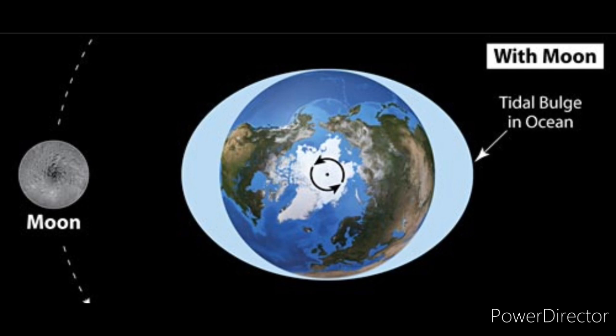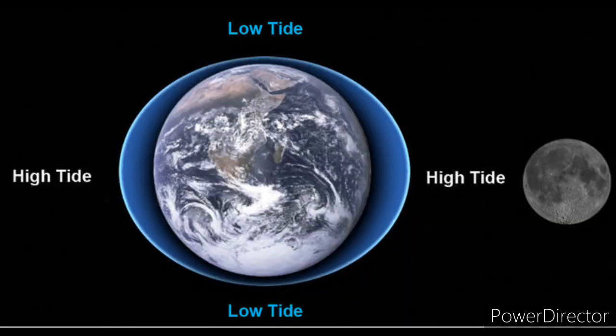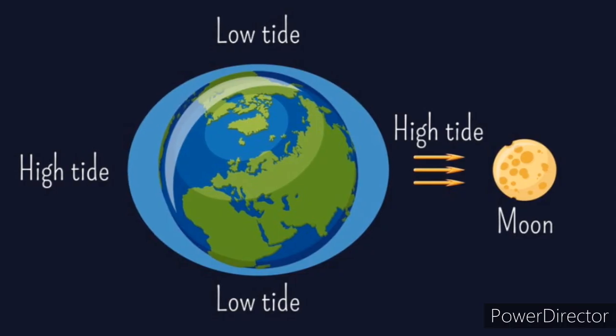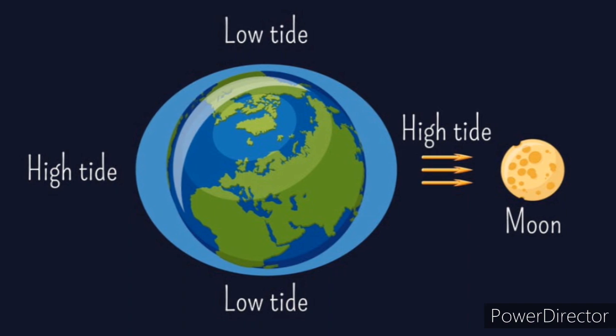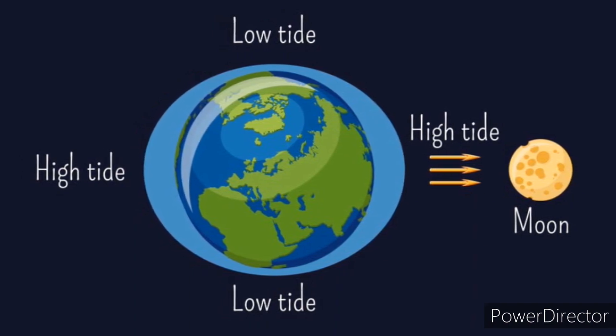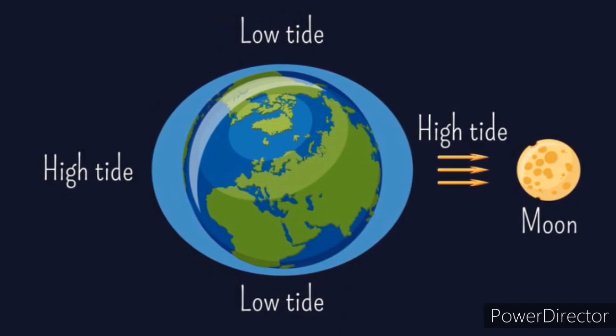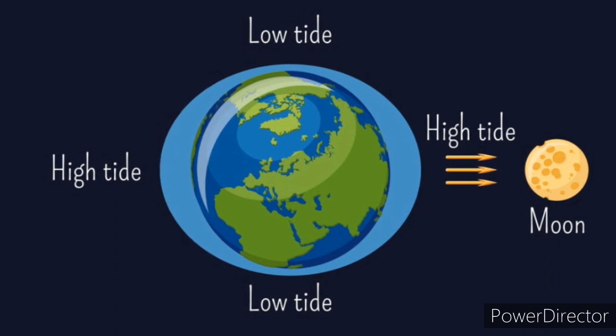The Earth rotates around its axis, and the bulge is directly in line with the moon. Due to the fact that the moon is our closest neighbor that also has gravity, we call this end-to-end bulging. When the moon is above the ocean, this creates high tides.